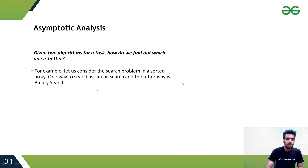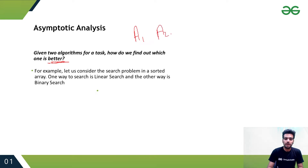Now, asymptotic analysis — what is this? Given two algorithms for a task, how do we find out which one is better? To find which one is better, we use asymptotic analysis. For example, if there are algorithms A1, A2, and A3, we need to find out which algorithm we should use — and for that, we use asymptotic analysis.